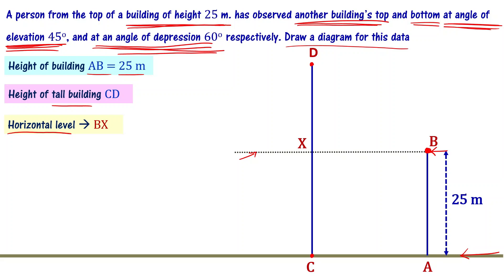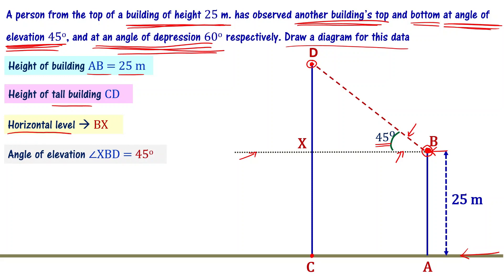Connect B with D to draw the line of sight. The angle of elevation is the angle between the line of sight BD and the horizontal level BX. The angle of elevation, angle XBD, equals 45 degrees.